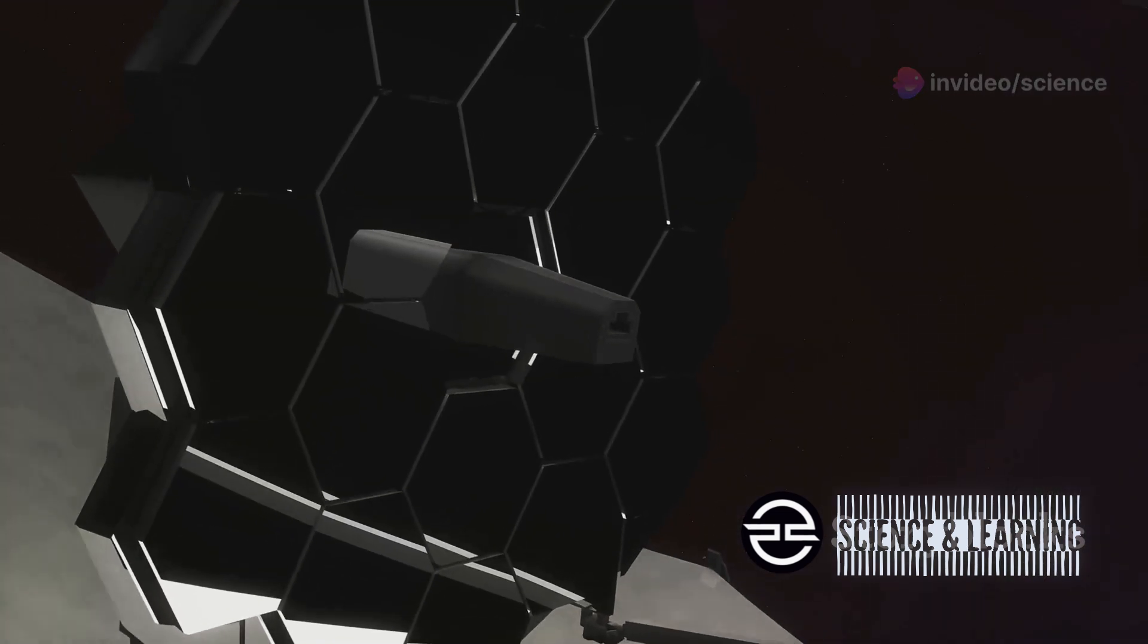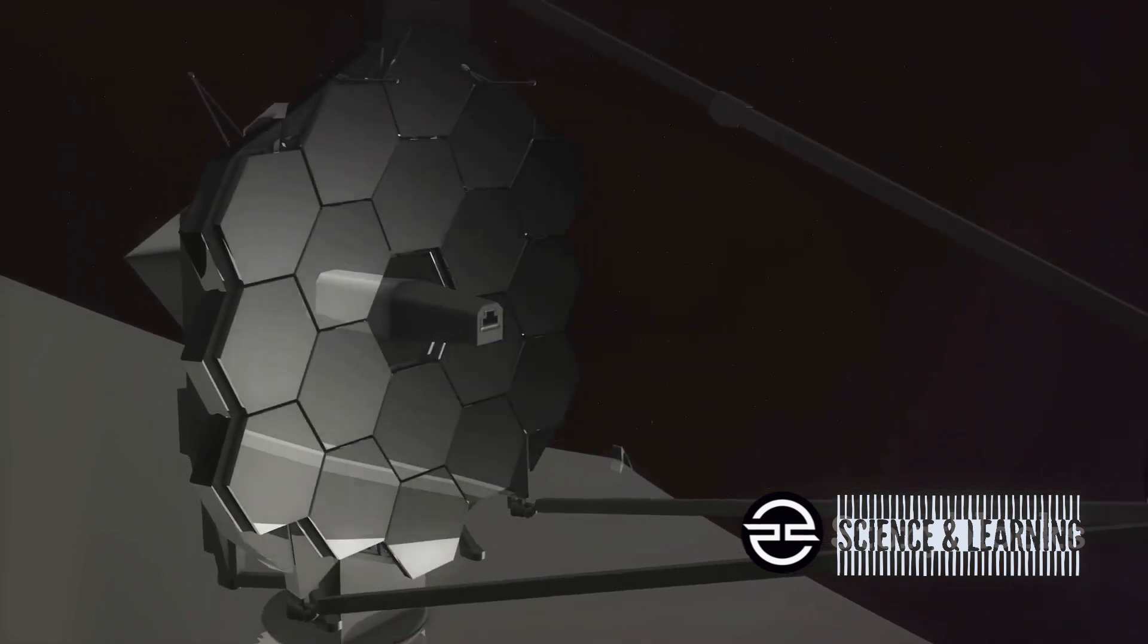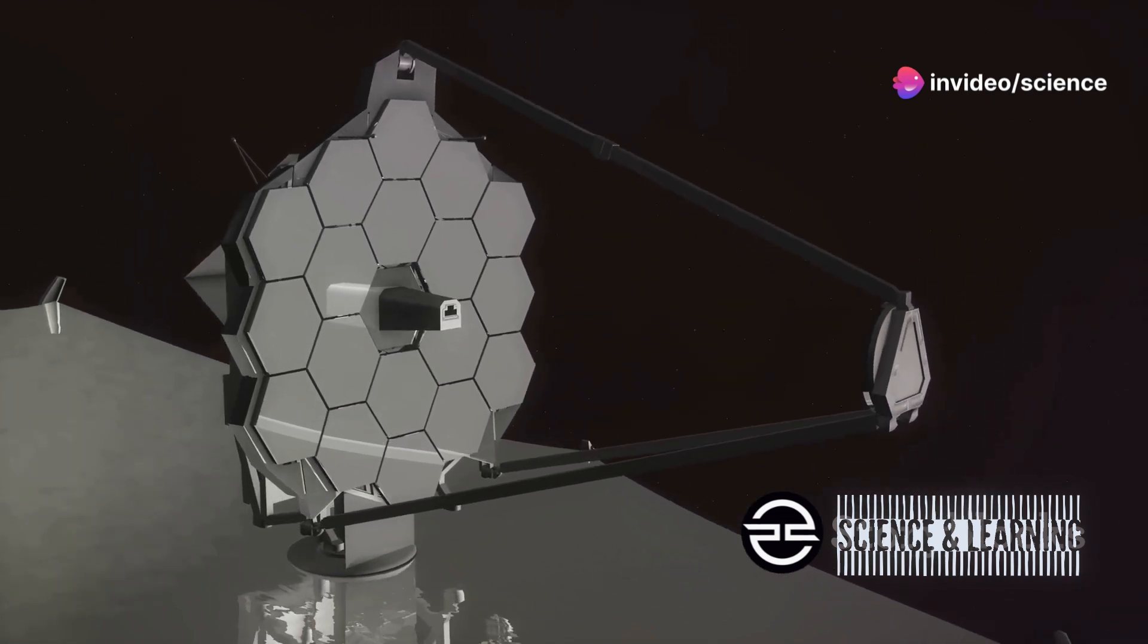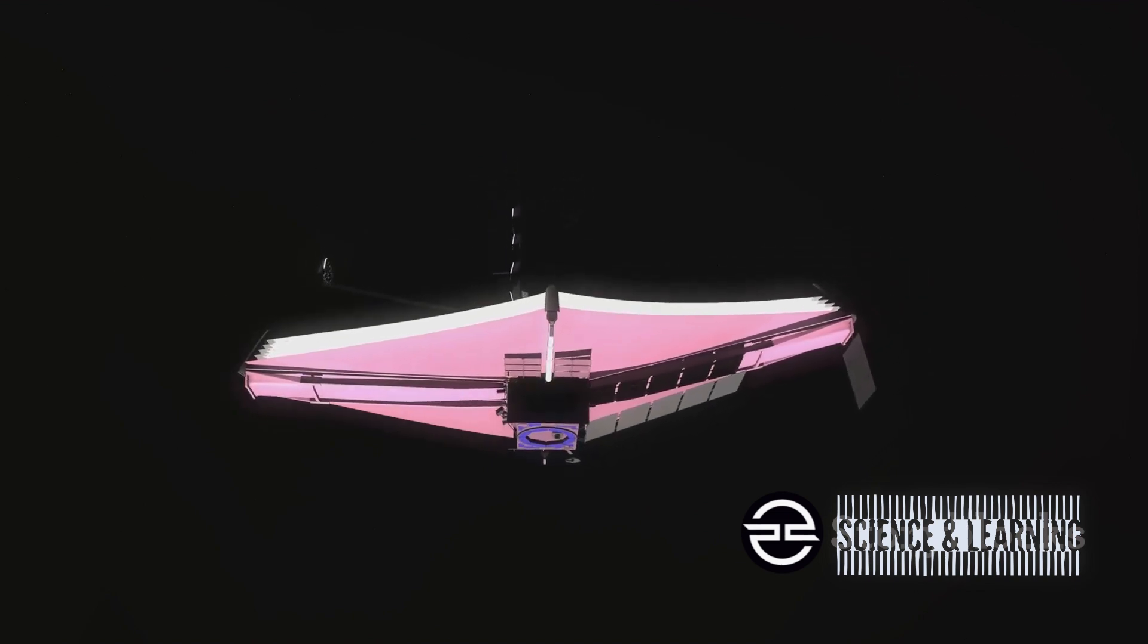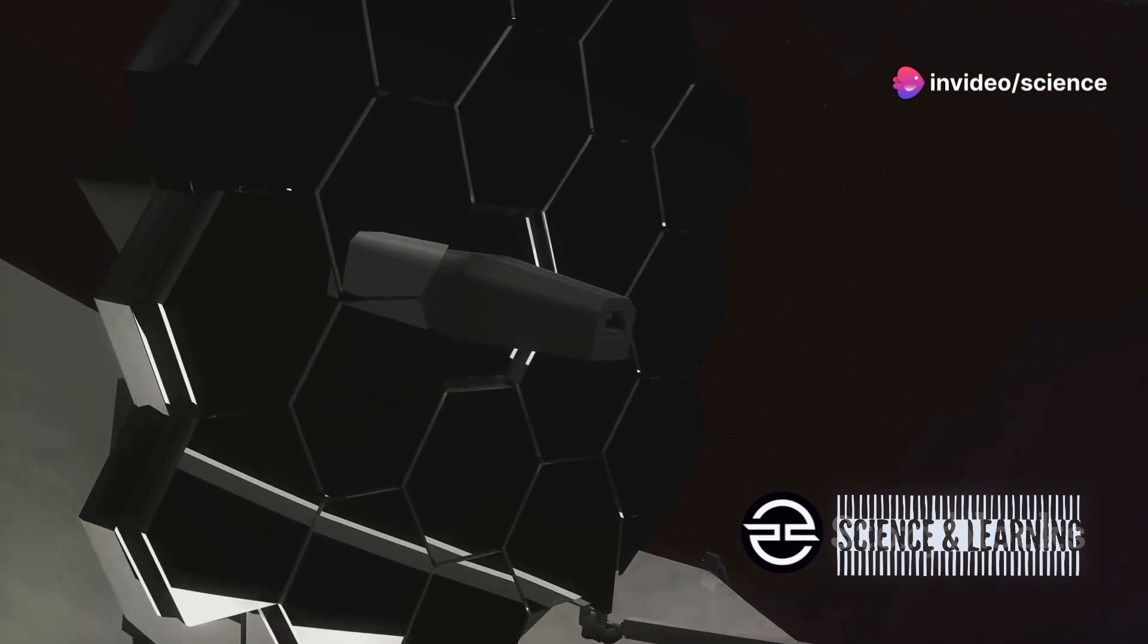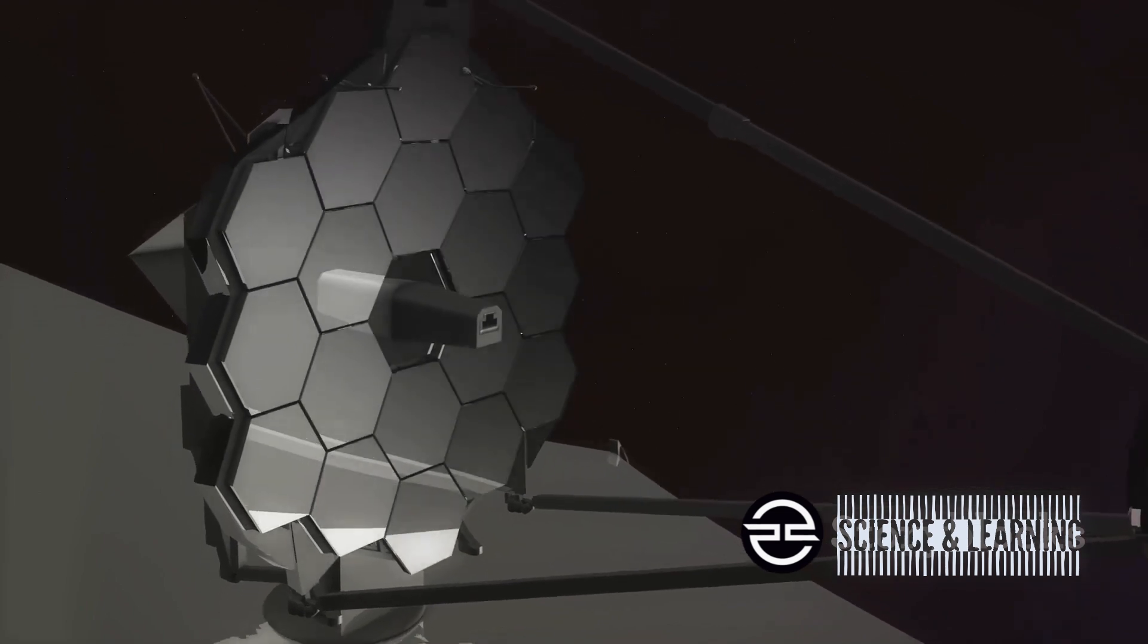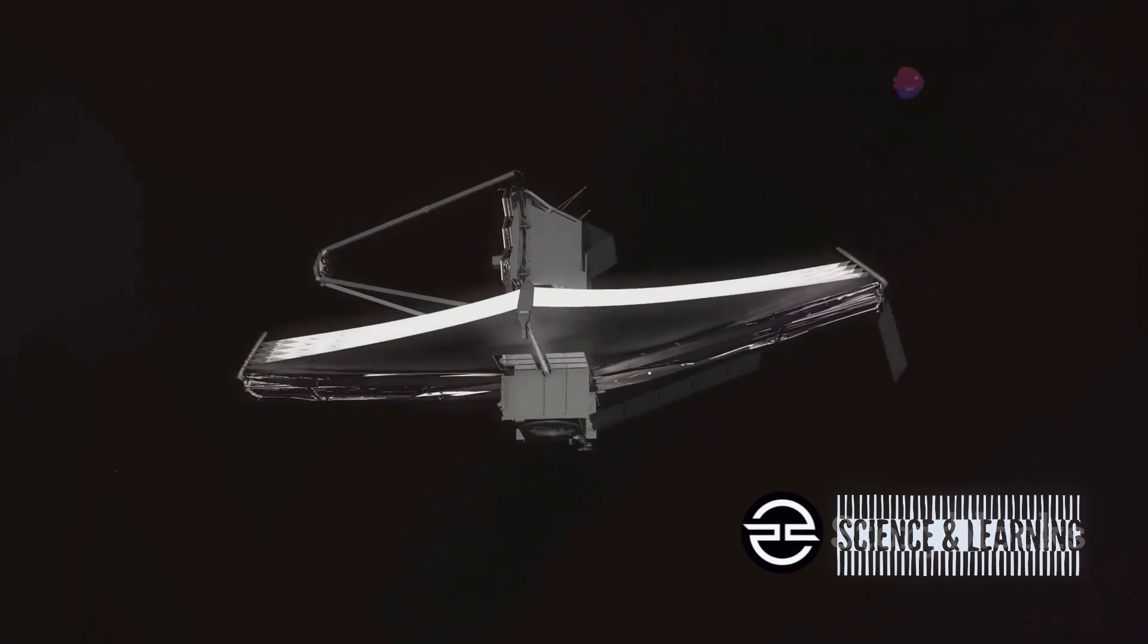The James Webb Space Telescope is equipped with cutting-edge instruments and a significantly larger mirror than Hubble's. This mirror, spanning over 21 feet in diameter, allows JWST to gather more light from the objects it observes. This makes it extraordinarily sensitive to infrared light, the kind emitted by the most distant and ancient objects in the universe. Infrared capabilities are crucial because they enable the telescope to peer through cosmic dust clouds that block visible light.